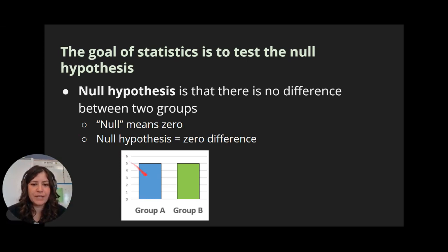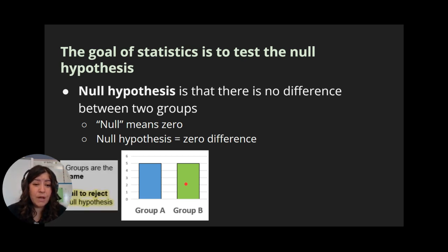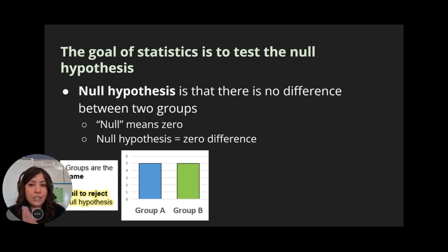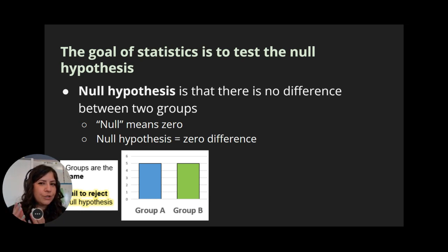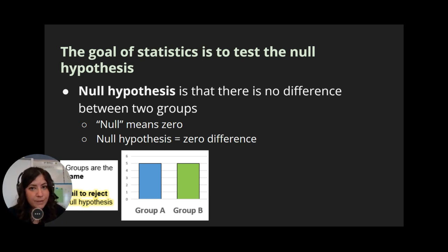Here's a little graphical representation of what this means. In this example, group A is very similar to group B — in fact, exactly the same. So we would say that we fail to reject the null hypothesis. We don't say the word 'accept' in statistics because it's a bit too bold and too strong, so we just say we fail to reject.